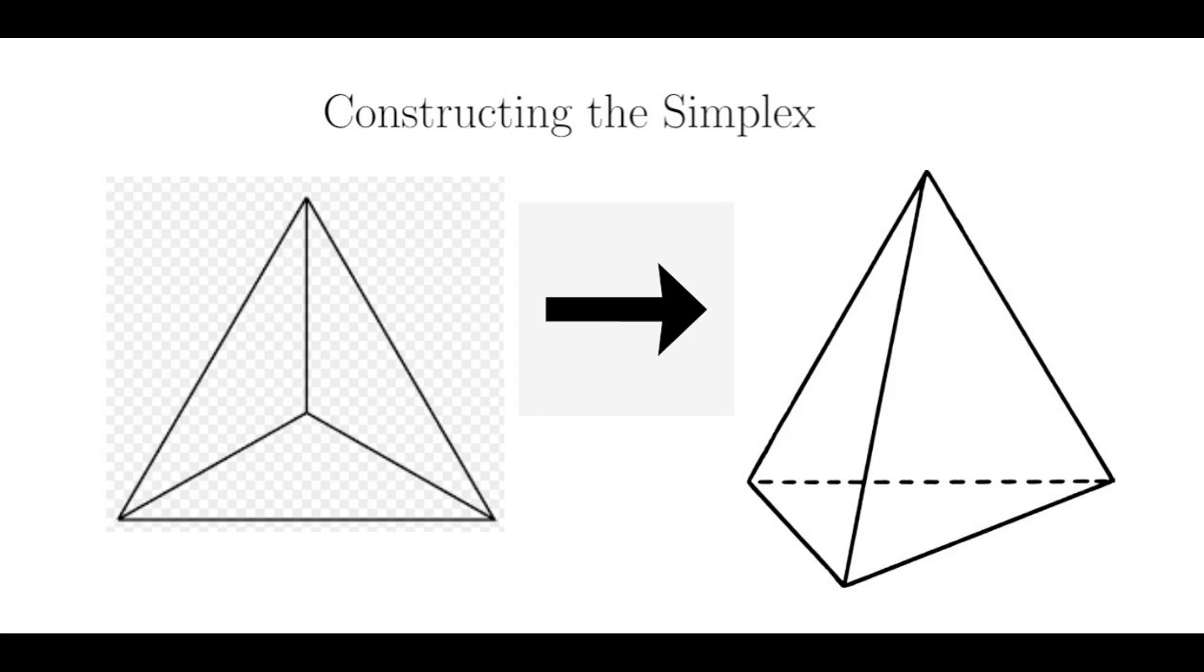Shown above is how it's done for k equals two. In the two-dimensional case, we have a triangle. I draw a point in the center and connect the lines. Then I increase the lengths of the line segments so that the object is regular. This forces out my center into the third dimension, and now I have a tetrahedron.